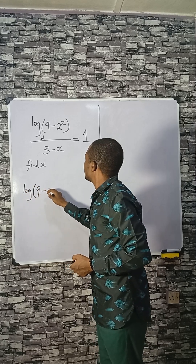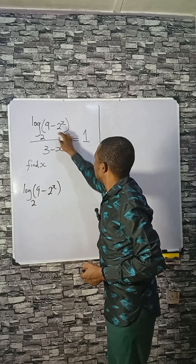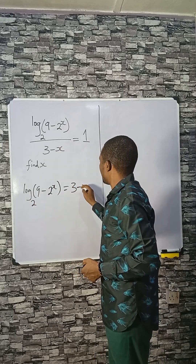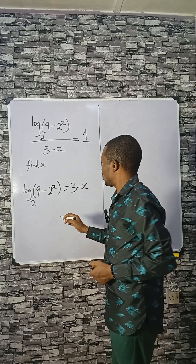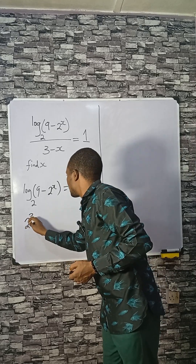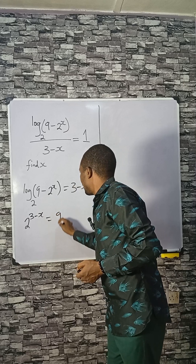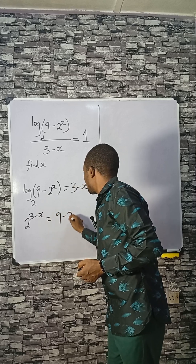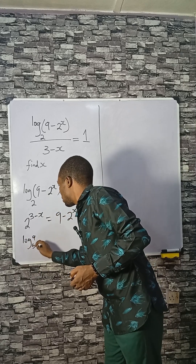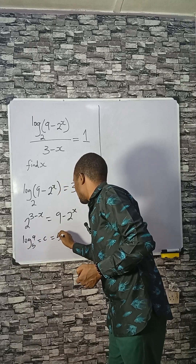We have log 9 base 2. This times 1 and this minus x, so you have 2 raised to the power of this minus x equals 9 minus 2 raised to power x, because you have log a base b equals c, you can write it as b raised to power c equals a.